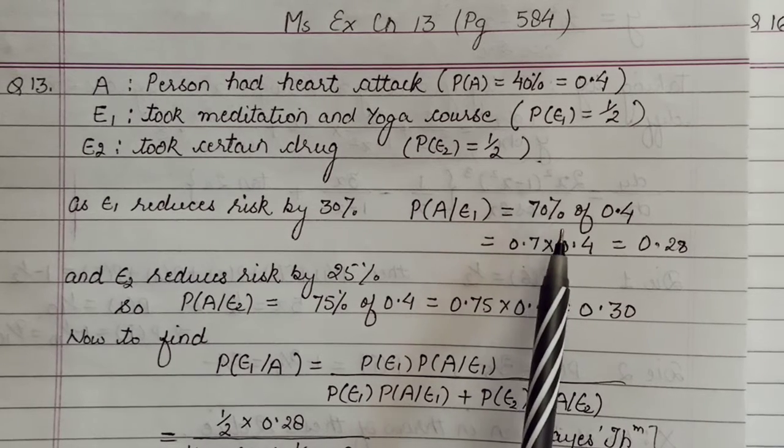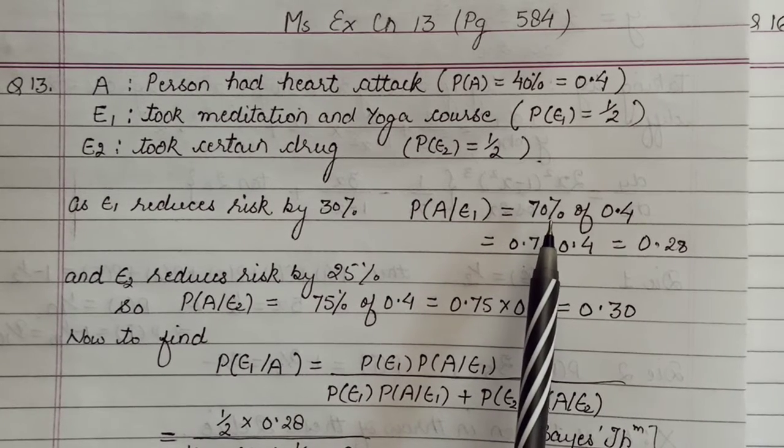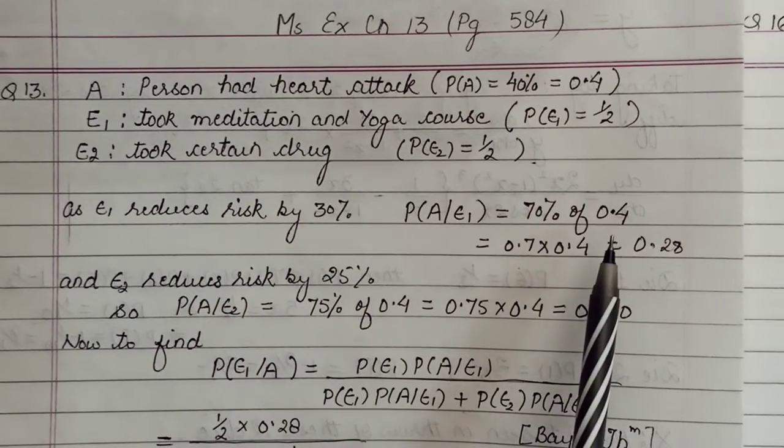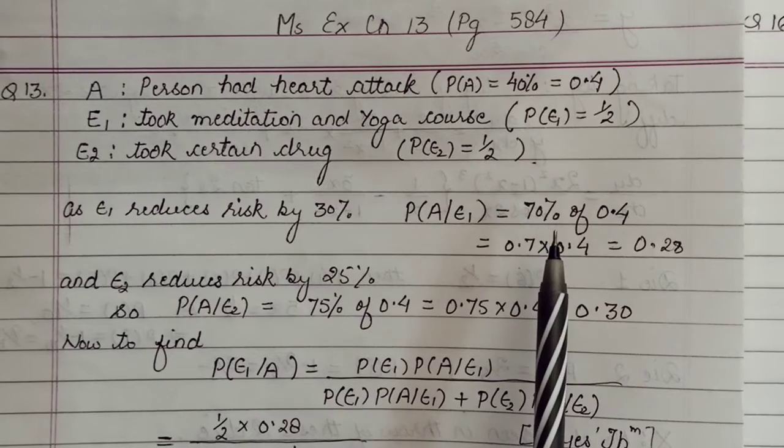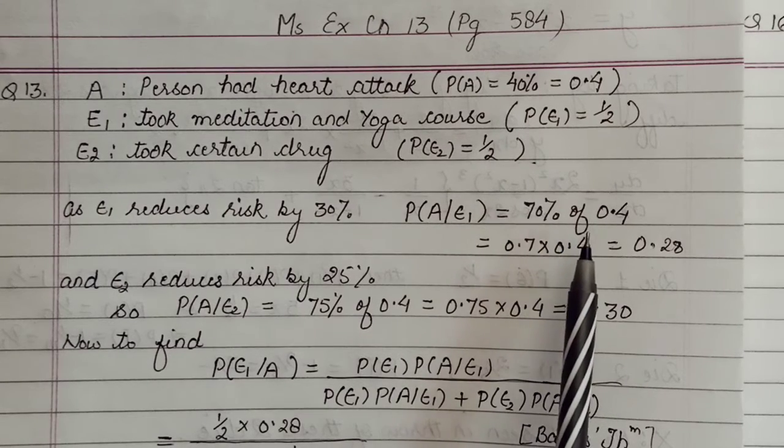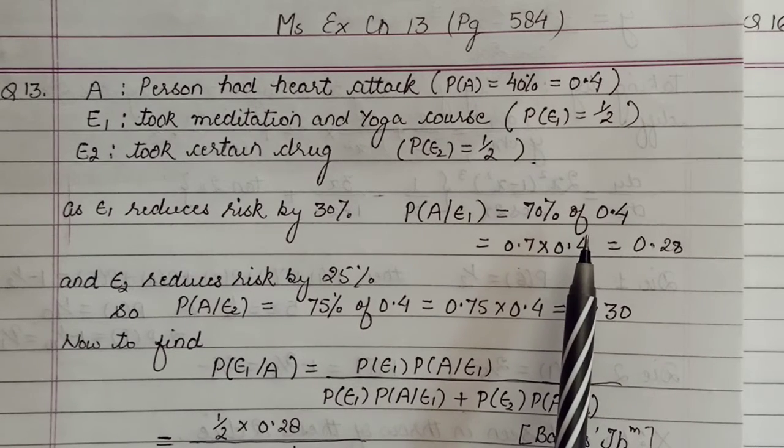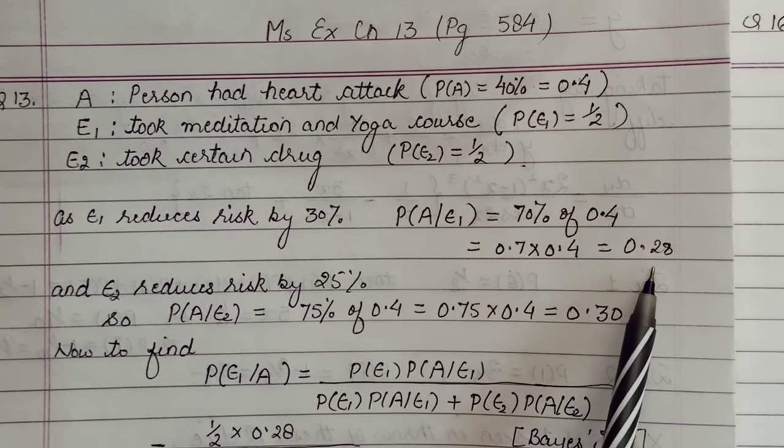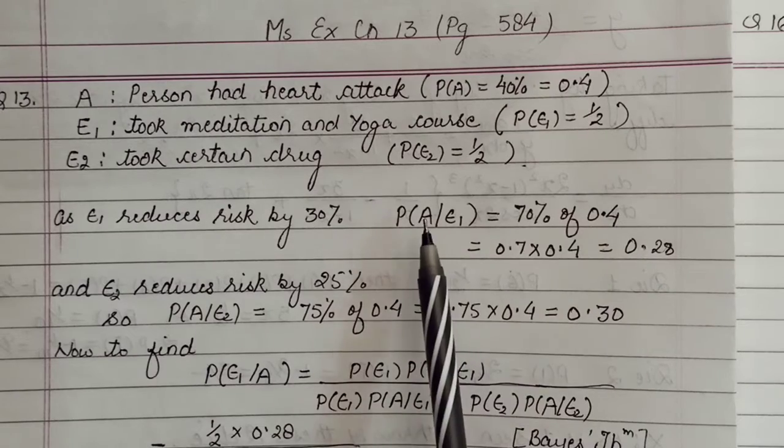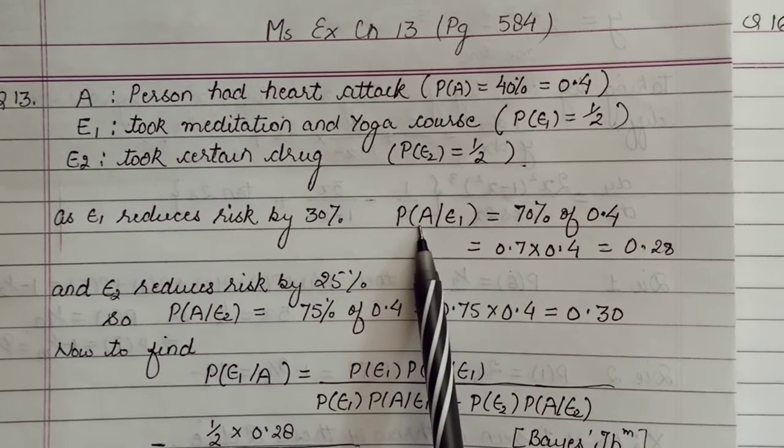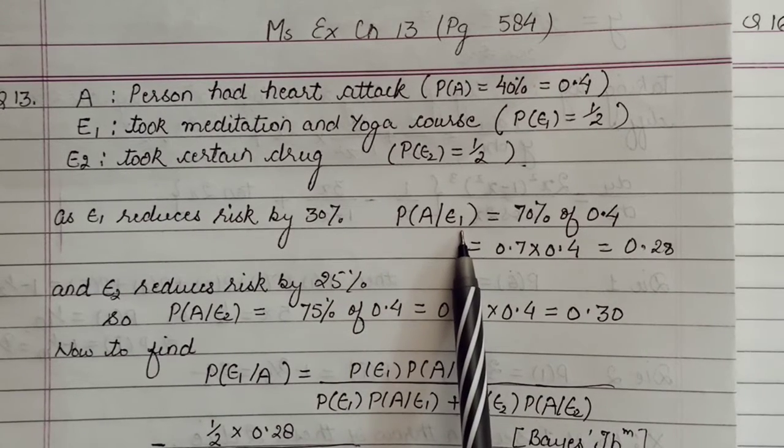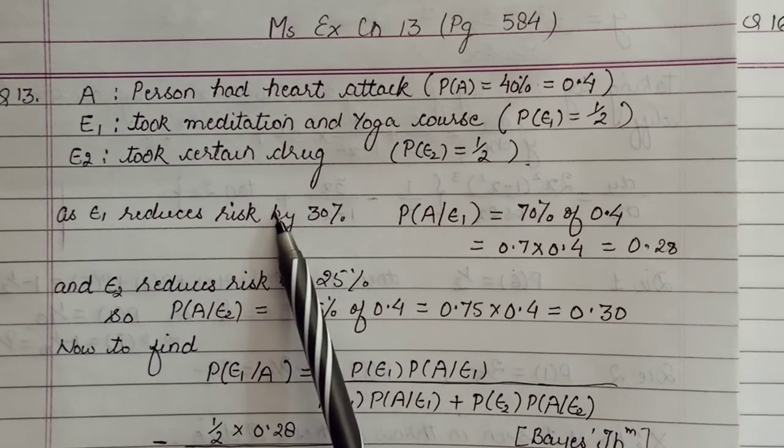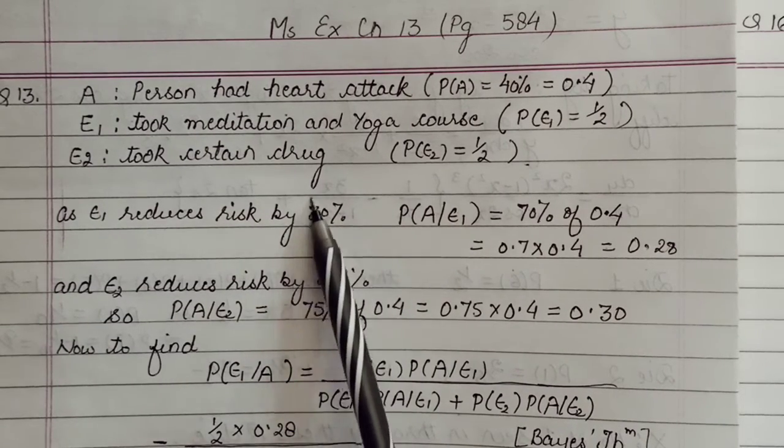So this is a bit typical in this question compared to rest of them. In others, probabilities are given directly. Here we're saying 70 percent of people had heart attack in spite of this. So of those who had heart attack, you have to take 70 percent. So this is additional here, rest is as usual. So 70 percent means 0.7 times 0.4. So probability of A after E1 - having heart attack in spite of meditation - will become this much.